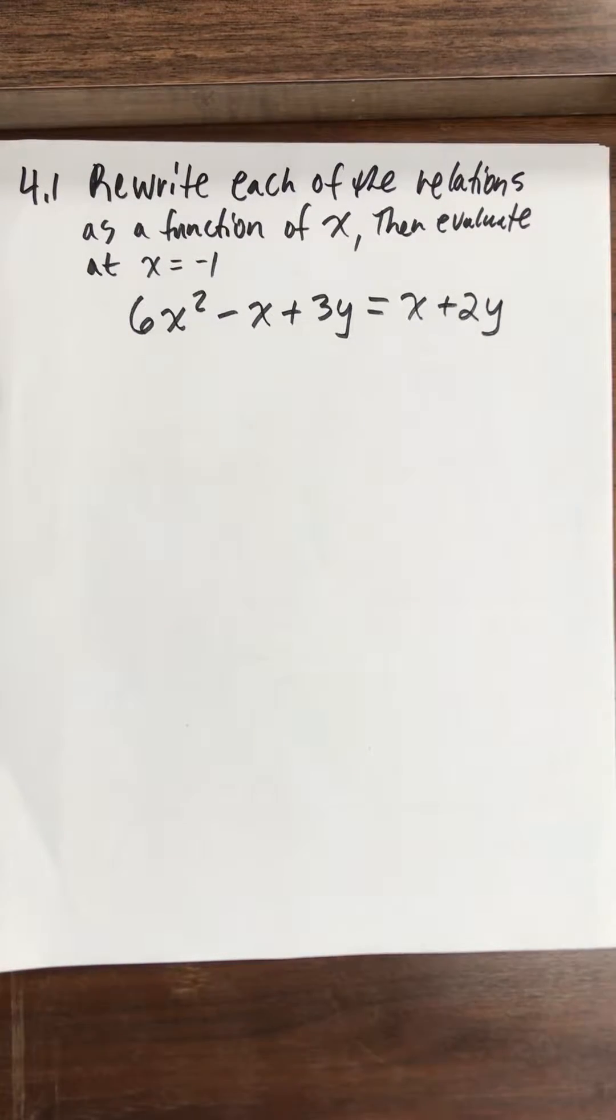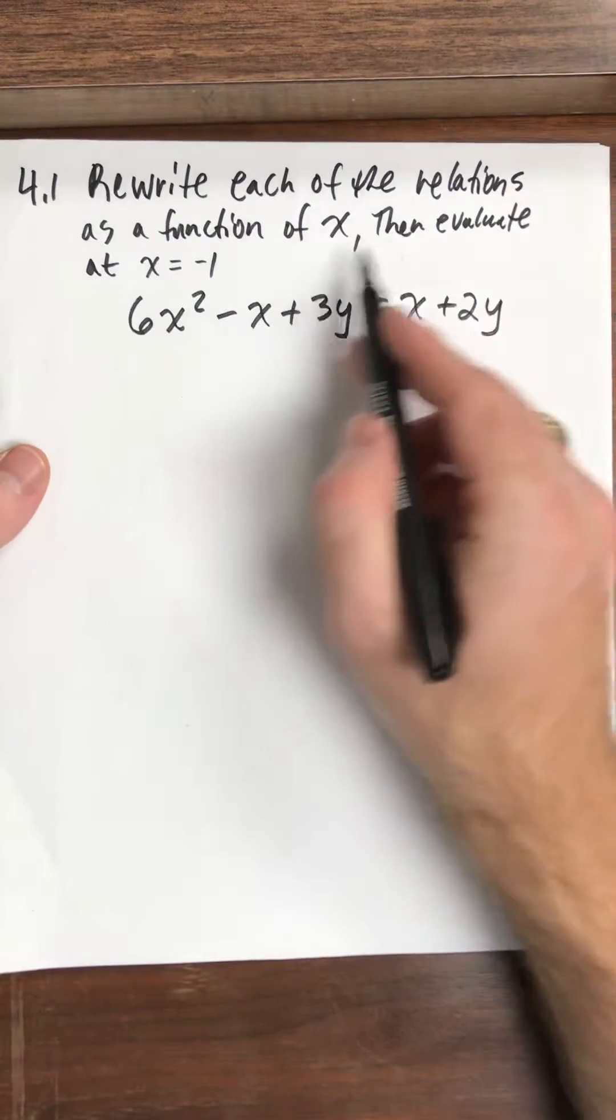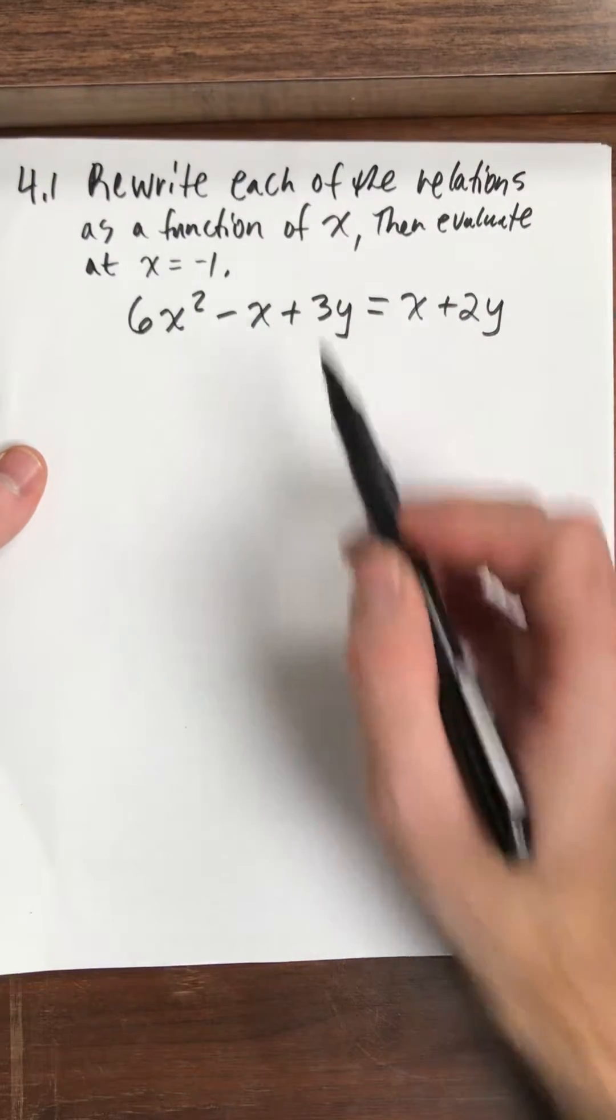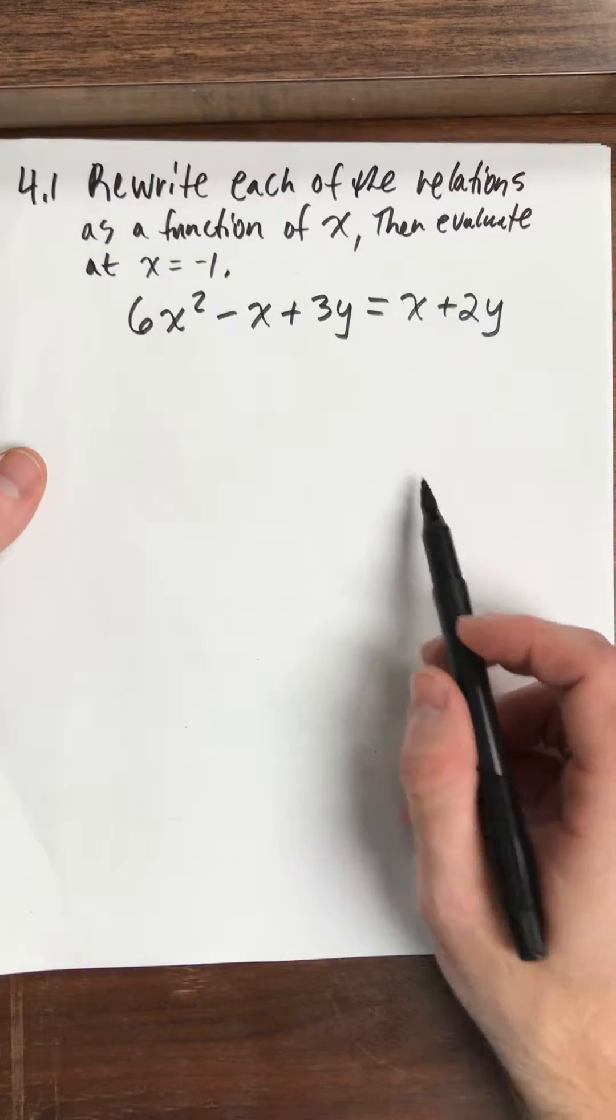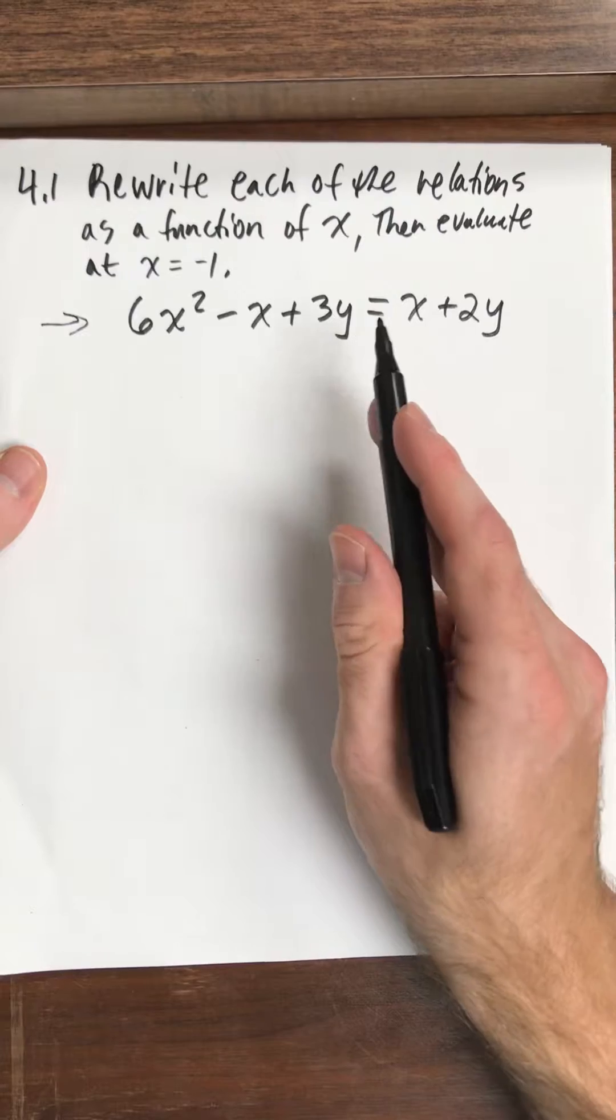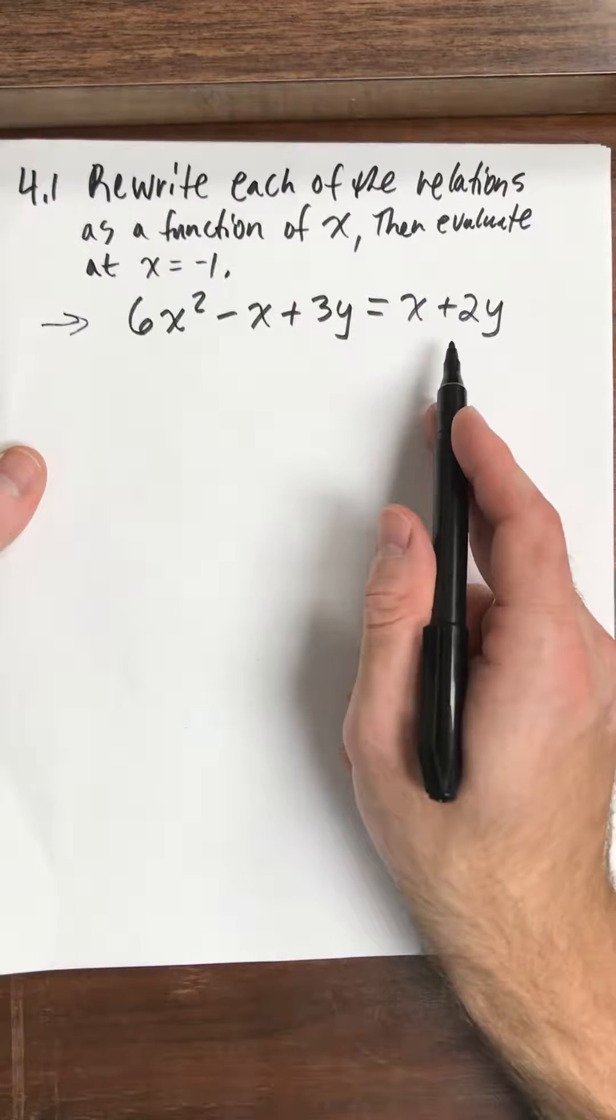Alright, so 4.1 we're trying to rewrite each relation as a function of x and then evaluate at the point x equal negative 1. For this one we're only going to do one here and so we need to rewrite this relation as a function of x.